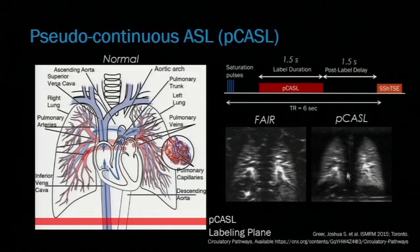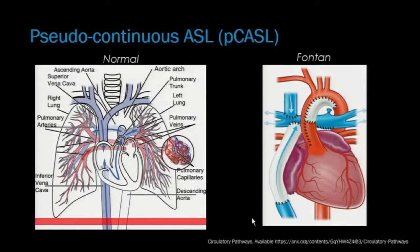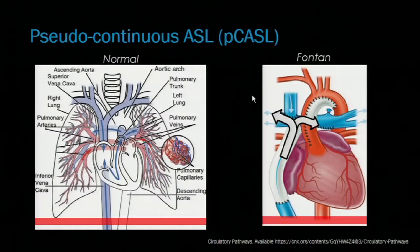In normal circulation, this can give an even distribution of labeled blood signal between the lungs, and we've compared this with FAIR perfusion. But in Fontan circulation, applying this same labeling approach, we can get a direct measure of this differential IVC flow by looking at the resulting lung perfusion.